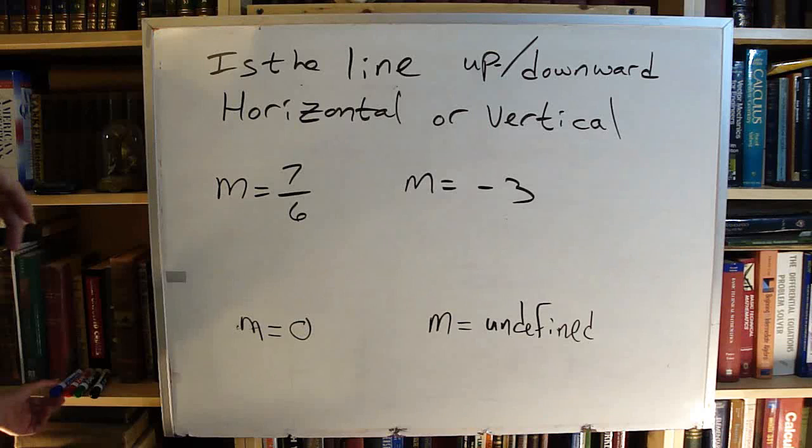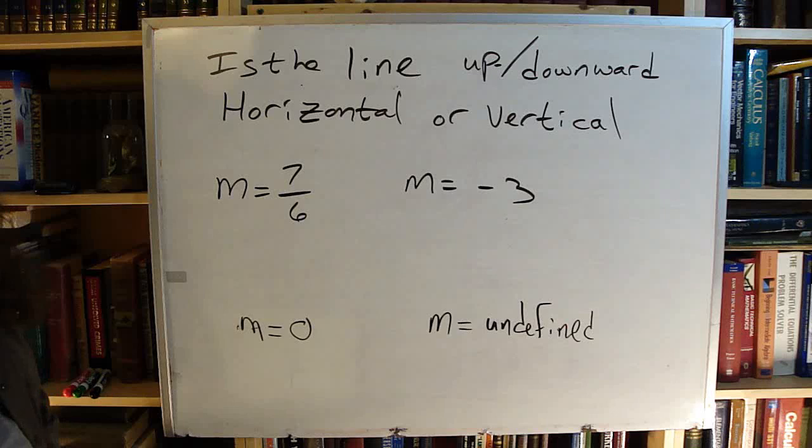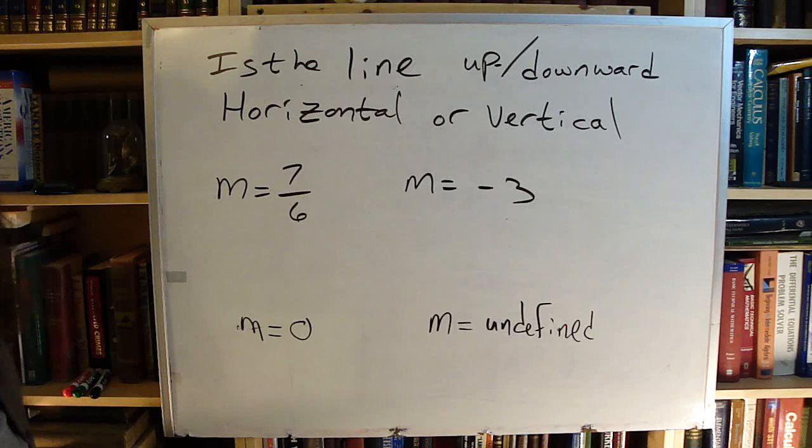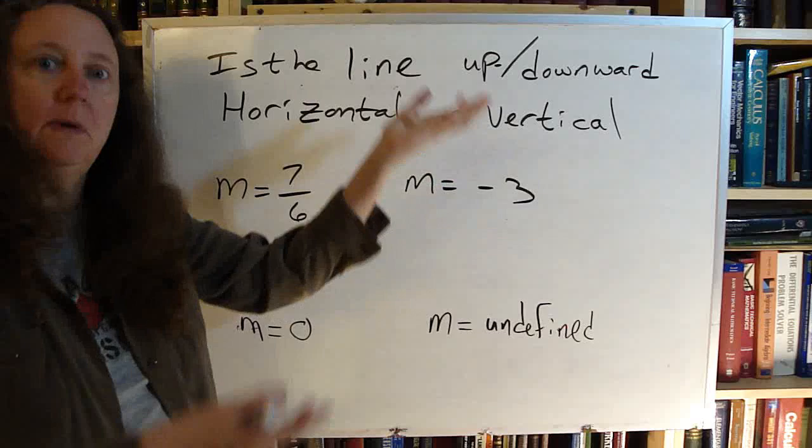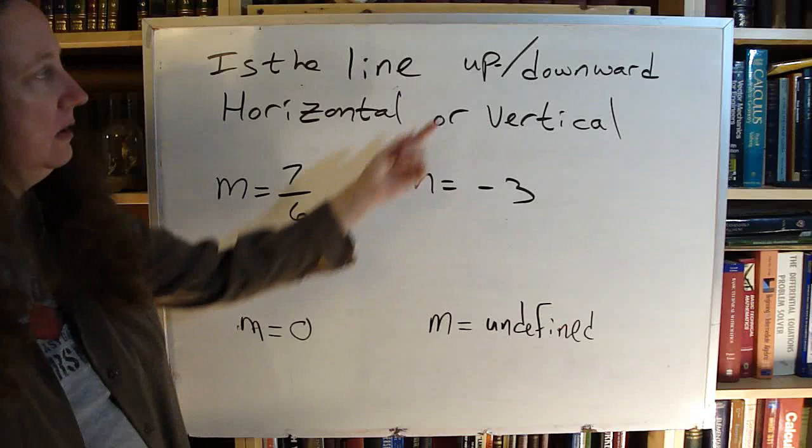Is the line upward, downward, horizontal, or vertical? We have four problems here to be worked out, and we have to decide for each of them which one it is. So if you think about upward - up, positive, happy. You're up, you're peppy. So up is positive.